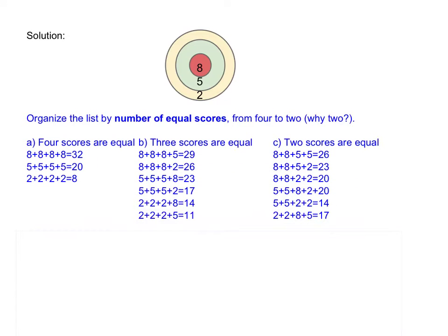This is what the data looks like. When four scores are equal, all land in 8, or all in 5, or all in 2, giving those sums. When three scores are equal in the 8-region, the fourth lands in a different one — listed from better to worse. Or all three land in the 5-region, and the other possible cases are listed from better to worse. Or all three land in the 2-region and the last one lands in either 8 or 5.